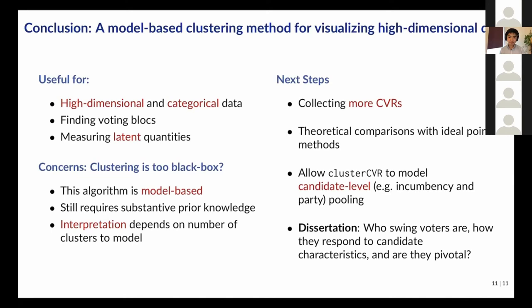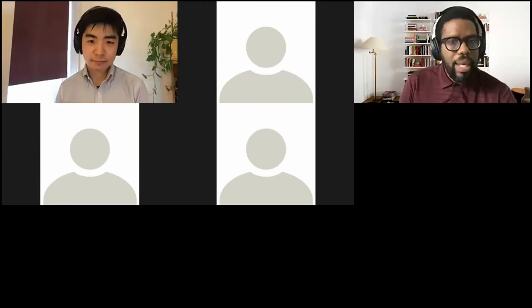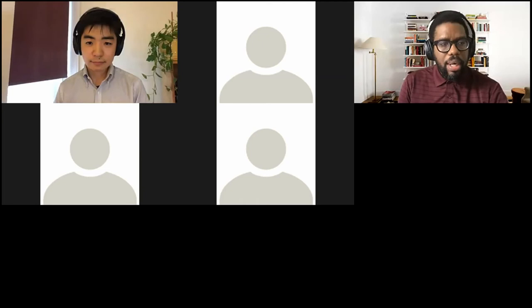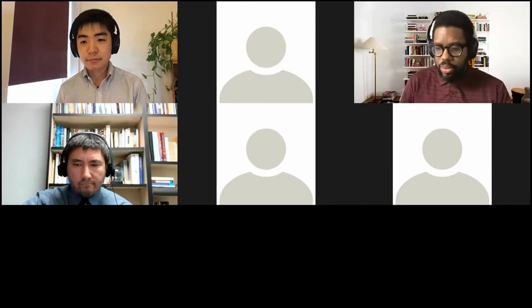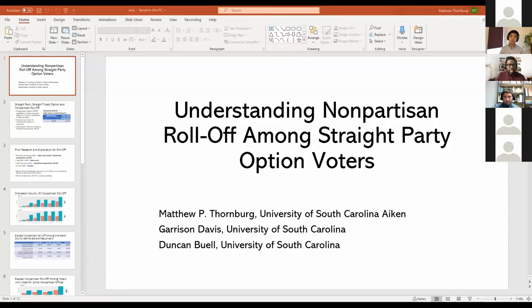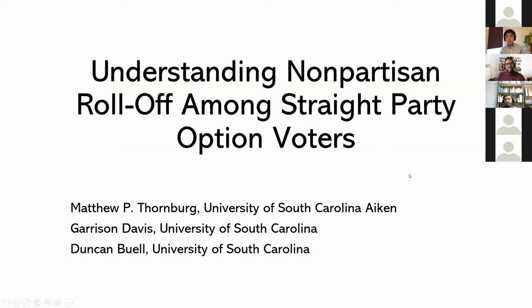Thanks so much, Shiro, for a great presentation. The next paper on the panel is titled 'Using the Straight Party Option to Understand Satisficing While Voting,' which continues this discussion about straight-ticket voting and ballot design. We have presenting Matthew Thornburg as well as his two co-authors, Garrison Davis and Duncan Bell. I'll hand it over to Matthew.